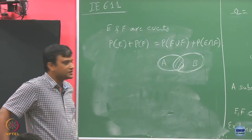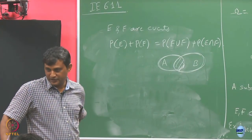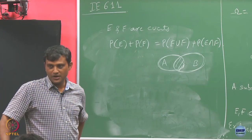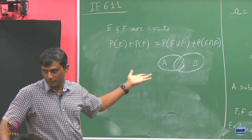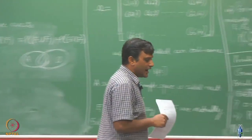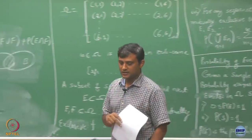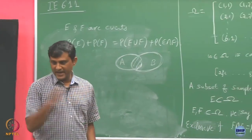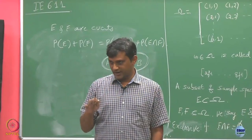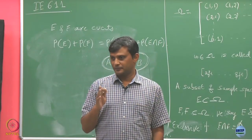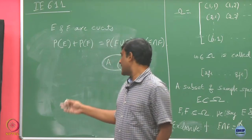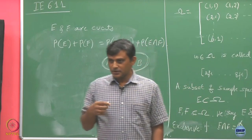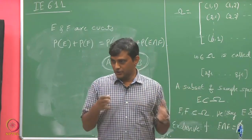We have now introduced the basic notion of sample space, events, and probability, and we want this probability to satisfy some intuitive properties. What we will now do is start with some basic assumptions on the probability space or event space and define probability in a systematic way, so that whatever properties we want naturally follow from our basic definition — you start with your basic framework such that those properties are induced to happen.